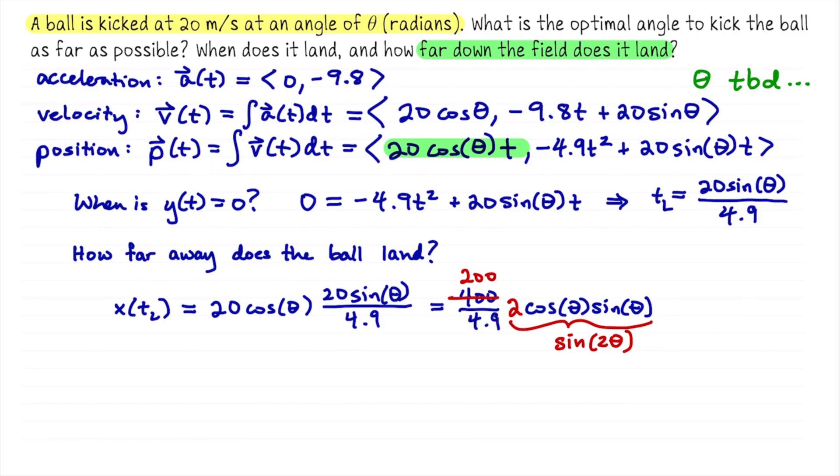Okay, so let's recap where we are so far. We've solved for when it lands in terms of theta. We've also solved for how far down the field it lands in terms of theta. We are now going to determine the optimal angle theta to maximize this expression for how far away the ball lands.